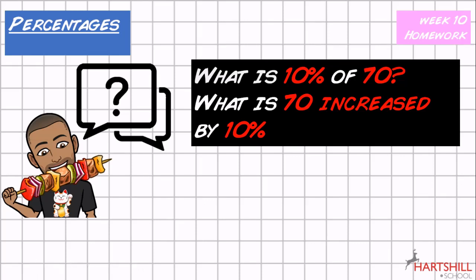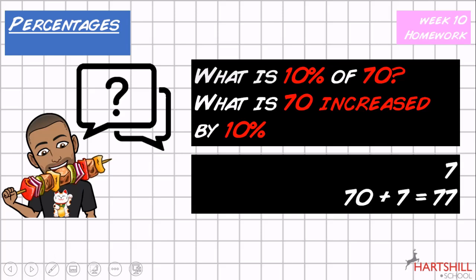Quick fire question. I want you to work out what 10% of 70 is, and then what it would be if you increase 70 by 10%. So what is 70 increased by 10%? Right, so 10% of 70 is going to be 7, because all you need to do is divide that by 10. And if you're going to increase 70 by 10%, well, we know that 10% is 7, so all you need to do is add 7 onto 70.